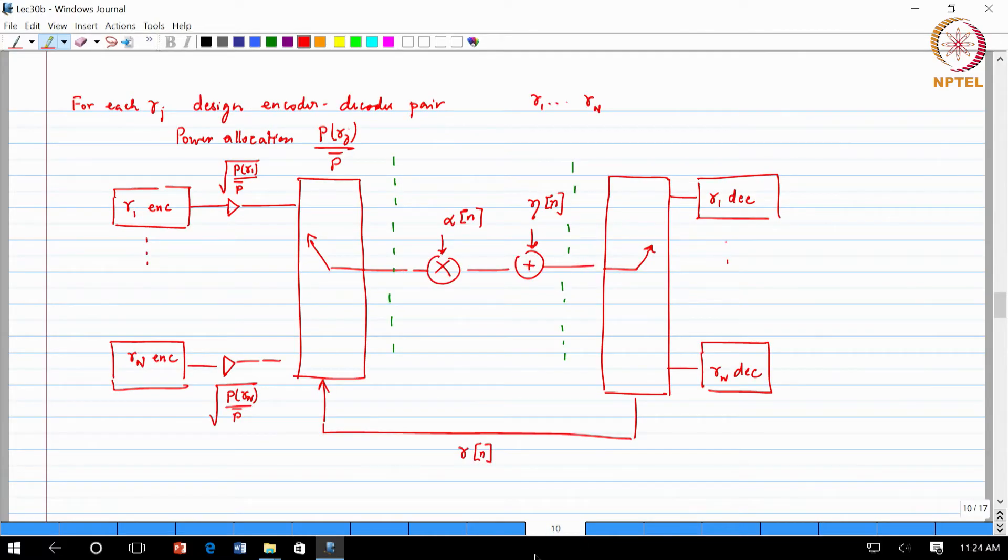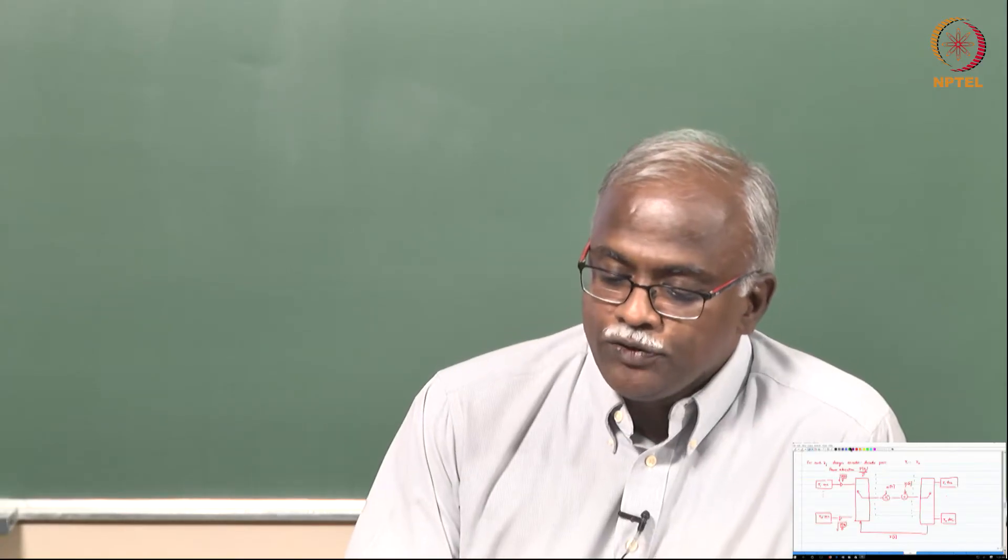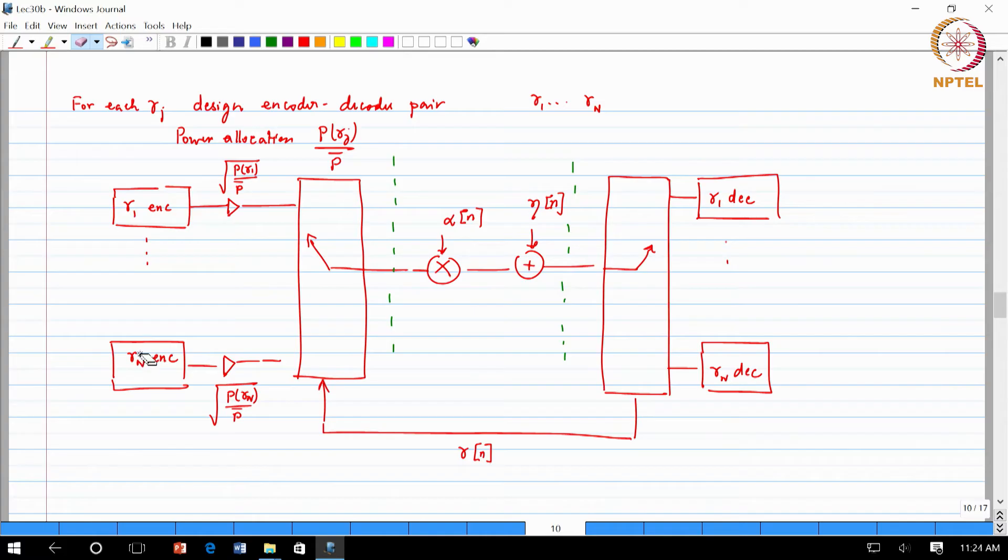This is a graph again, this is there in Goldsmith. I will just explain the graph. Whatever is the SNR let me quantize it or the channel conditions in the SNR - we looked at the case with 3 SNRs, it can be some n SNR quantized values. For each of those SNRs you choose the optimum modulation and coding scheme.